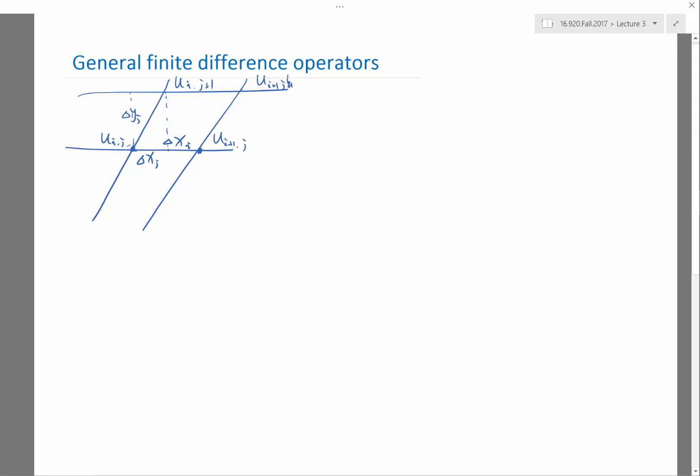And this is U I plus one J plus one, for example. So I have the value at every grid point. That's how finite difference works. In 2D we also store the value at these grid points, at the discrete points where for regular mesh the points are where these mesh lines intersect.